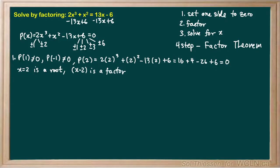We've found one solution to our equation — plugging 2 in for all the x's gives 0. So x equals 2 is one solution, but we have to continue with our factoring process to find the rest. In step 2 of our four-step process we divide our polynomial p of x by the factor we just found, x minus 2.